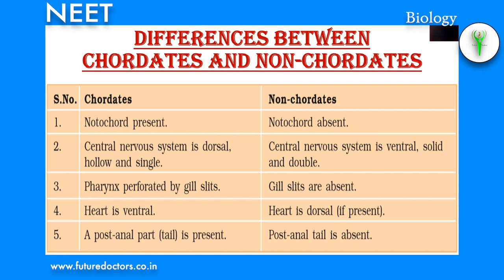Differences between chordates and non-chordates: in chordates, notochord is present; in non-chordates, notochord is absent. In chordates, the central nervous system is dorsal, hollow and single; in non-chordates, it is ventral, solid and double. In chordates, the pharynx is perforated by gill slits; in non-chordates, gill slits are absent. Heart is ventral in chordates; heart is dorsal if present in non-chordates. A post-anal tail is present in chordates but absent in non-chordates.